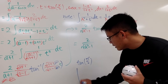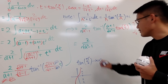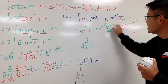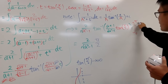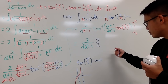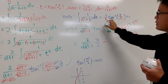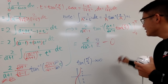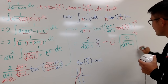Looking at the graph of tangent, as we approach π/2 from the left, tangent goes to positive infinity. So arctan(positive infinity) = π/2. That's the result when we plug in the upper limit. For the lower limit, plugging in 0 gives tan(0) = 0, and arctan(0) = 0. So the final answer is 2/(√(a²-1)) · (π/2 - 0) = π/√(a² - 1).